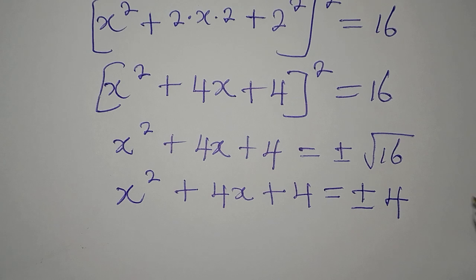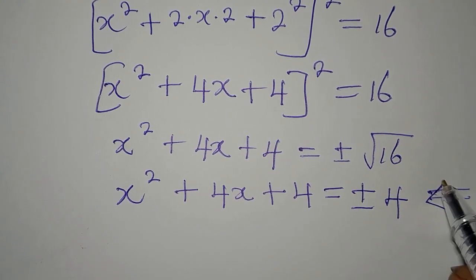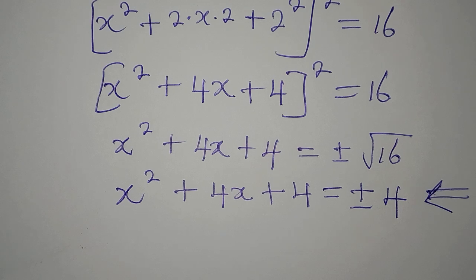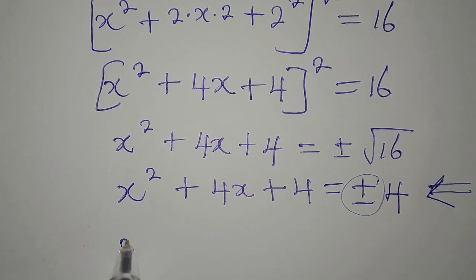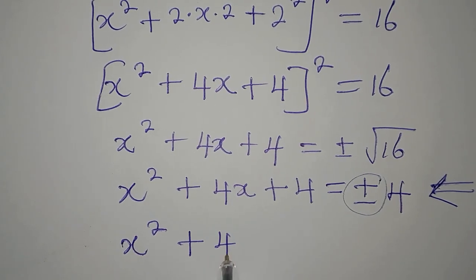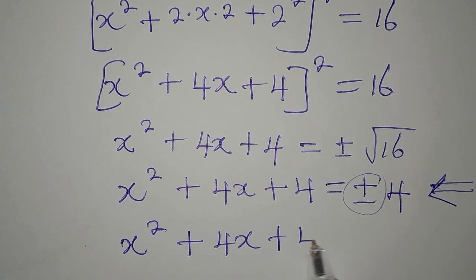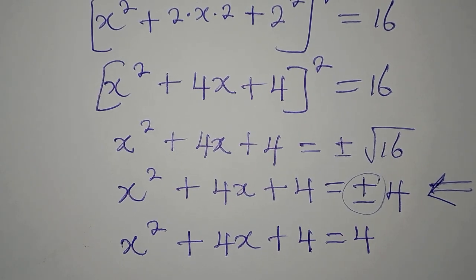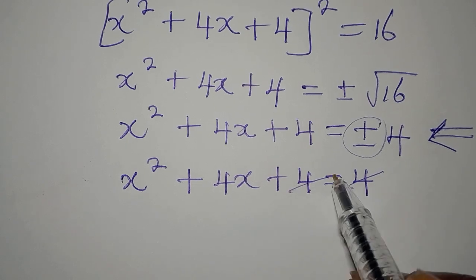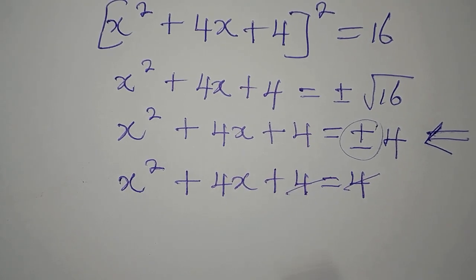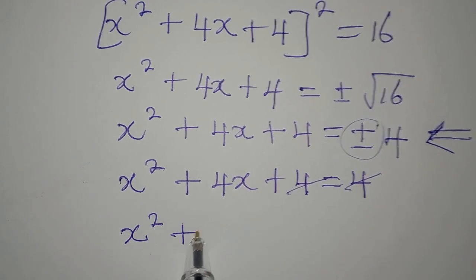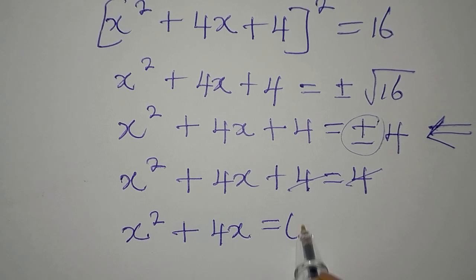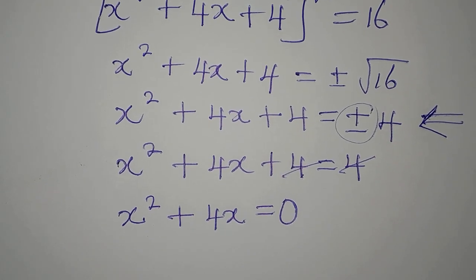This gives us two equations because of the plus or minus. Let's pick the positive case first: x² + 4x + 4 = 4. The 4s cancel since they have the same sign, so we get x² + 4x = 0. This is still a quadratic equation even though it has no constant term.